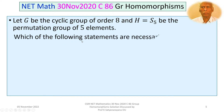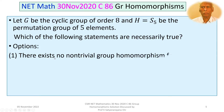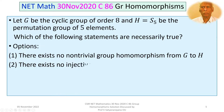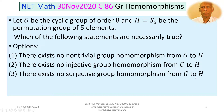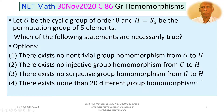Which of the following statements are necessarily true? We are given 4 options. Option 1: there exists no non-trivial group homomorphism from G to H. Option 2: there exists no injective group homomorphism from G to H. Option 3: there exists no surjective group homomorphism from G to H. Option 4: there exists more than 20 different group homomorphisms from G to H.